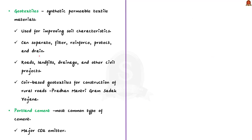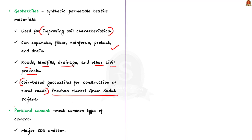Now let us move on to geotextiles. Geotextiles are synthetic permeable textile materials that are used for improving soil characteristics. They can separate, filter, reinforce, protect and drain when used in the soil. Geotextiles are the perfect materials for several infrastructural works like roads, landfills, drainage and other civil projects. The government has allowed the use of coir-based geotextiles for construction of rural roads under Pradhan Mantri Gram Sadak Yojana.